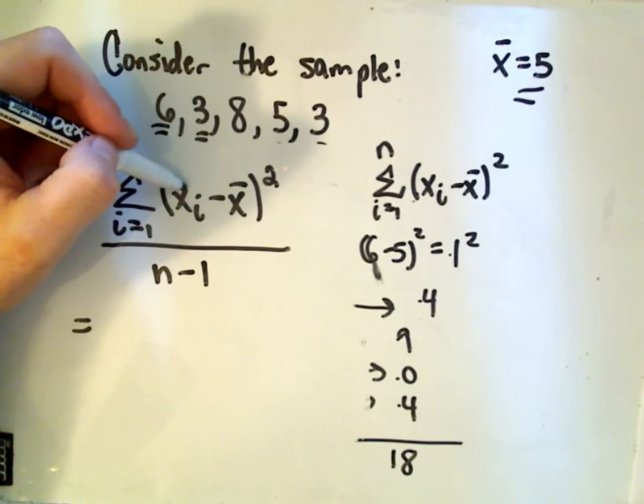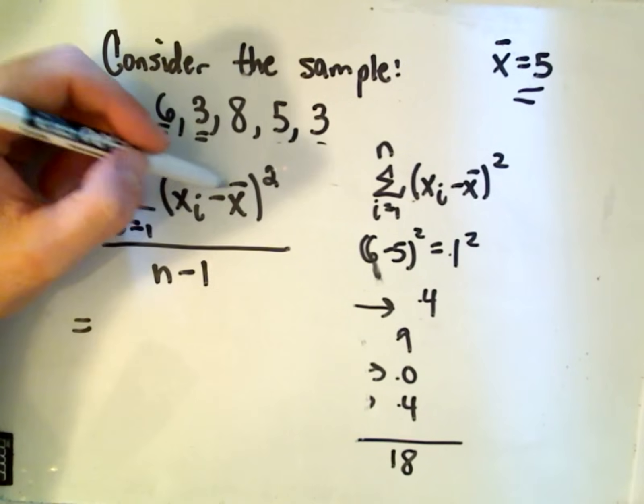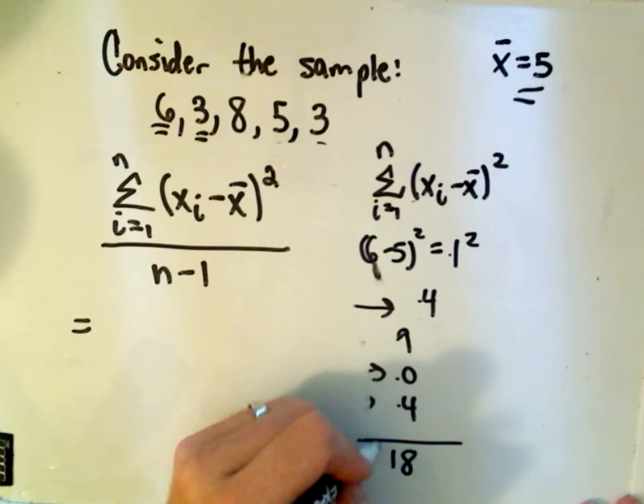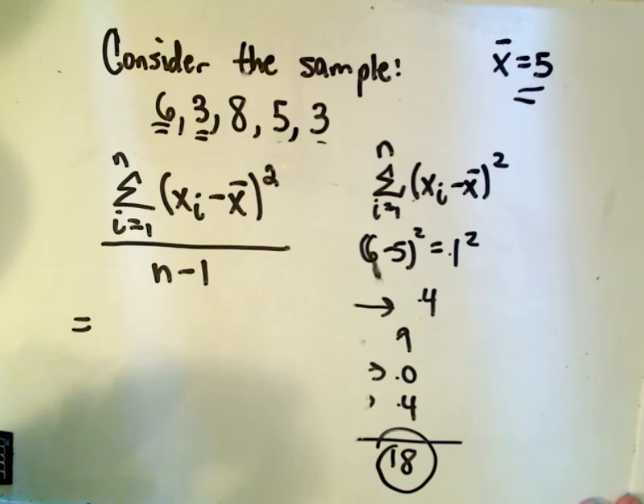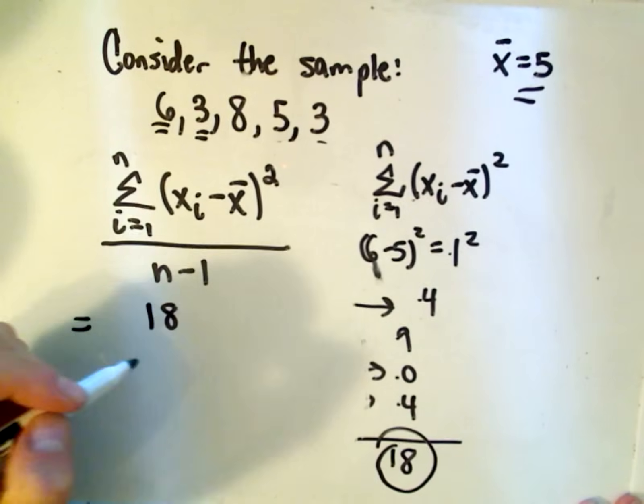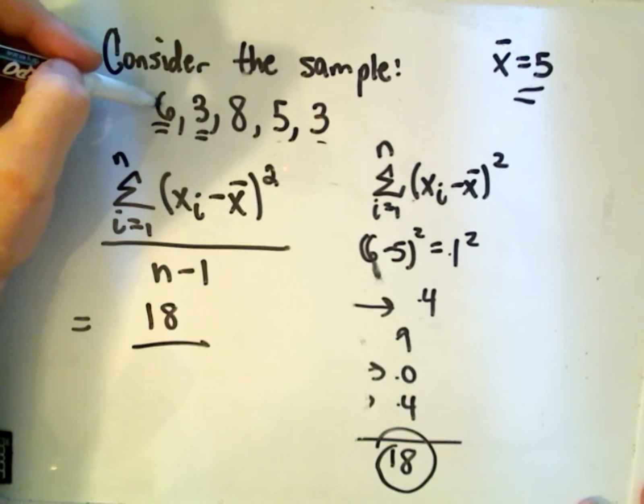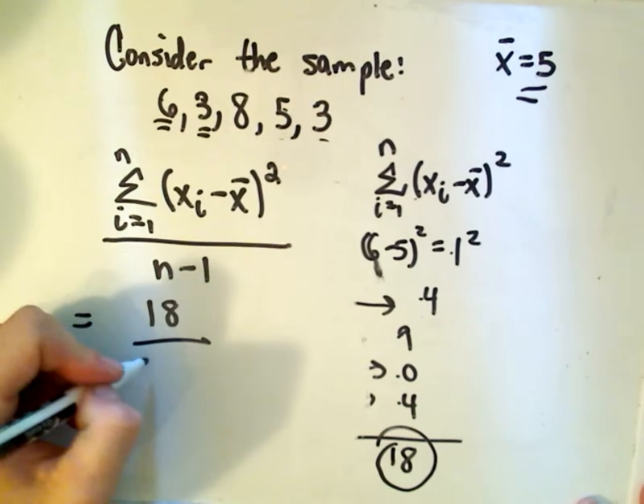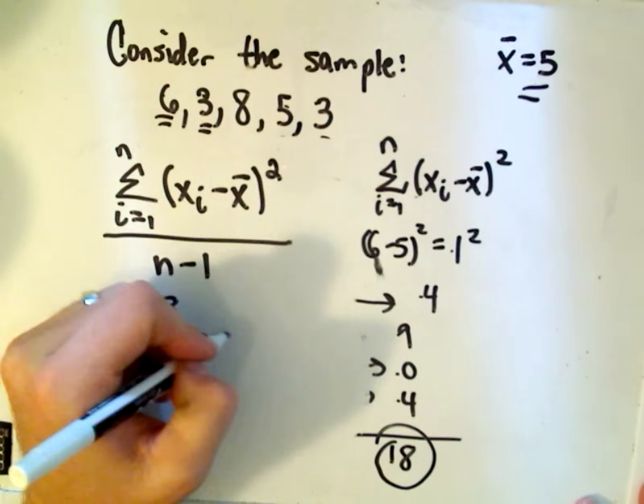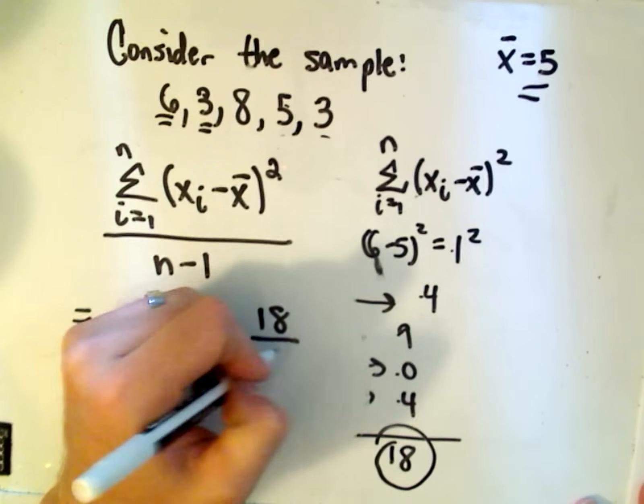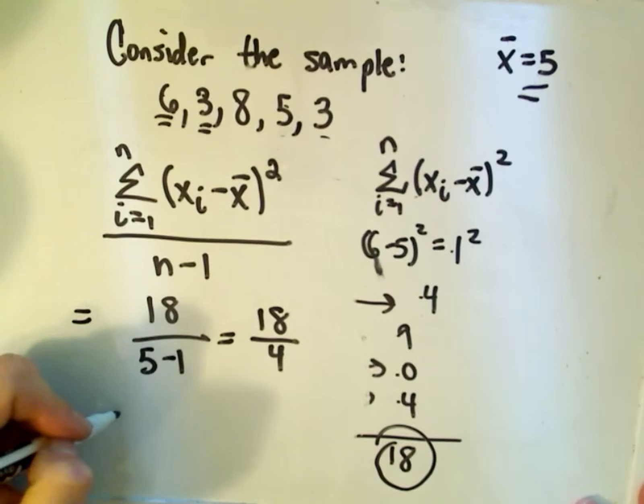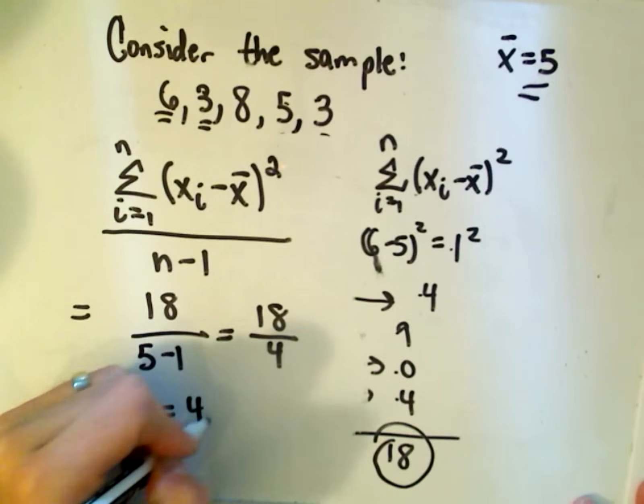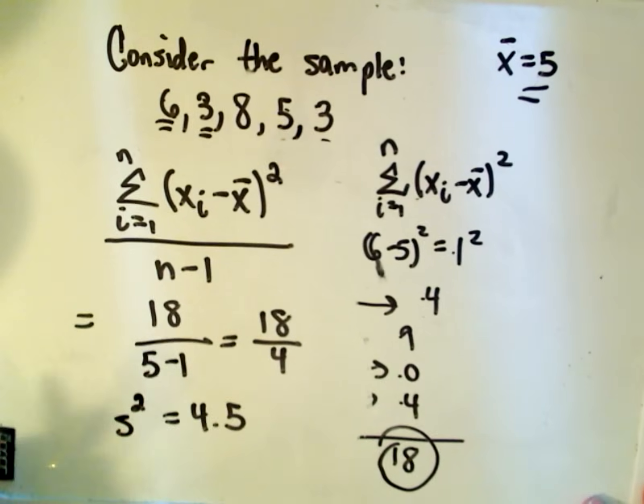Well, we just calculated if you take each point minus its average, square it, add it up, we got that to be the number 18. So that's what we just calculated on top. The number of objects, well, we can count 1, 2, 3, 4, 5. So we'll have 5 minus 1 on the bottom, or 18 over 4. And it says the variance, therefore, s squared is going to equal 4.5 for this set of data.